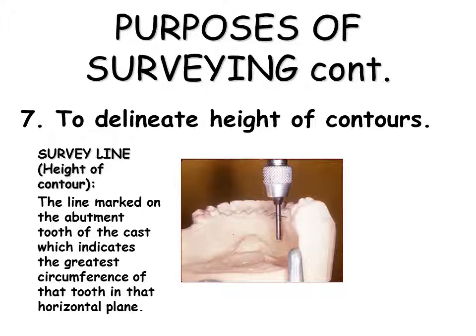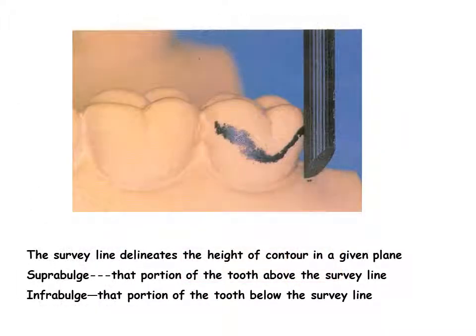After consideration of guiding planes, interferences, retention, and aesthetics, the height of contour of the abutment teeth is marked with the graphite marker. This mark is known as the survey line. A height of contour may be adjusted in cases where it would interfere with or compromise component placement. Common areas are the distal of lower premolars and the mesial of molars. The tilt of the cast determines the location of the survey line. The area superior to the line is called suprabulge; below the survey line is called infrabulge. Hence, the infrabulge clasp approaches the undercut from below the survey line.